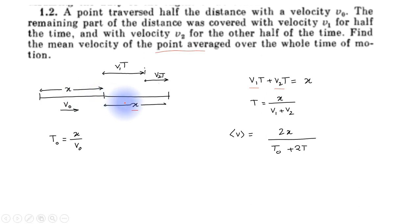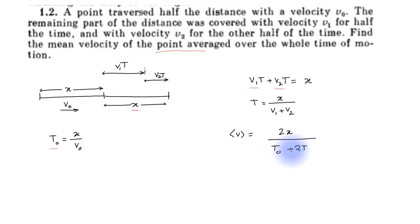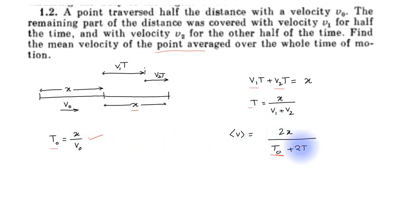Total time equals t0, which was the time the particle took to cover the first half, plus 2t, which is the time it took to cover the second half. So average velocity equals 2x divided by (t0 plus 2t). Now we place the value of t0 and t into this expression.